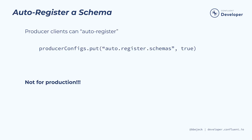And finally, when you're using a Kafka producer, you can also enable it to auto-register a schema. Although, while this is very handy for development, it's not something I'd recommend doing in production.